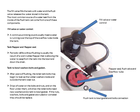Tank to bowl washers, bolts and gaskets — after years of flushing, the tank bolts may begin to leak as rubber washers inside and outside the tank wear out. Drips of water on the bolts and nuts and on the floor under them will show that the bolts need new washers and a tank-to-bowl gasket. If the nuts, washers, bolts and gaskets are rusted or corroded, they should be replaced.